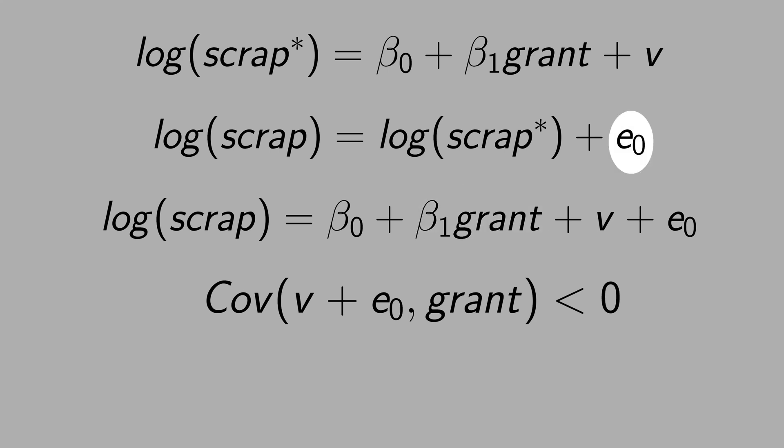But just for the sake of the exercise, let's assume that this measurement error is not systematic, that it is just random. We are assuming that the covariance or correlation between grant and the measurement error equals zero. In this case, the measurement error will not bias beta 1.